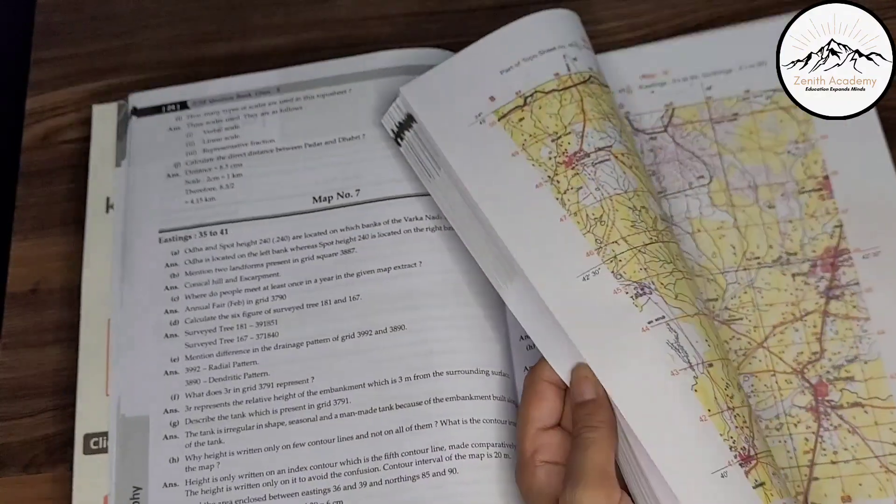Now see, topography. Now here in this chapter 1 is map study, interpretation and topographical maps. So they have given you different questions. For example, Eastings 41 to 47, they have given you questions. And according to different maps, they have given you questions and the answers. In the end, they have given you all the maps as well. You can see here. All the maps are here.